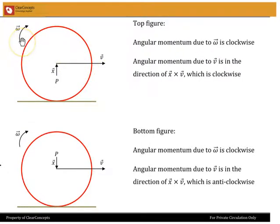omega obviously is clockwise. And so the angular momentum due to omega is also clockwise. The angular momentum due to v about the point P will be in the direction of x bar cross v bar. And you can see from the right hand rule that that is also going to be clockwise.